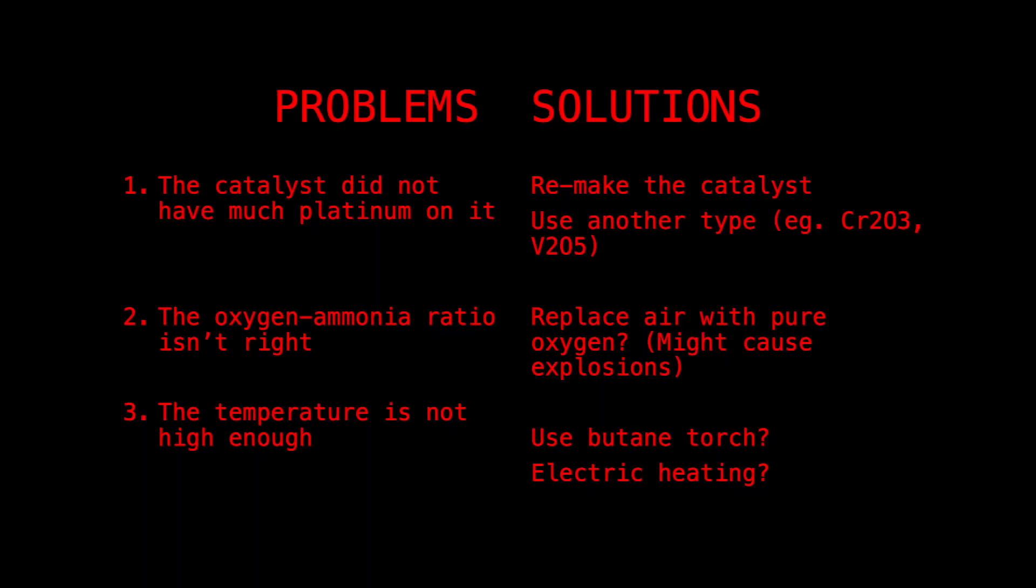The first problem is that the catalyst did not have a lot of platinum on it. In the video on the catalyst, I did not dissolve a lot of platinum into the solution, because I did not have a very concentrated hydrochloric solution, and the peroxide wasn't concentrated as well. So I'm considering to remake the catalyst using a more concentrated hydrochloric acid, or to do it in a different way, like change the catalyst. For example, I heard that using chromium 3 oxide or vanadium 5 oxide might work.